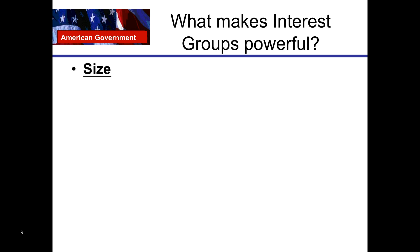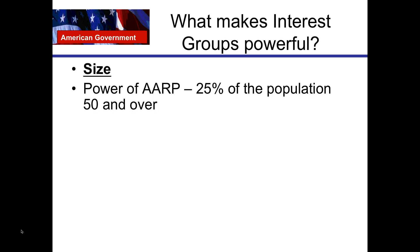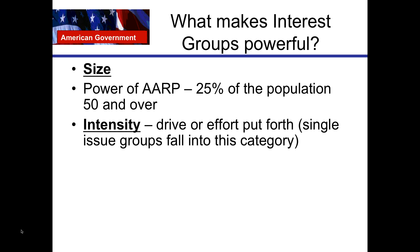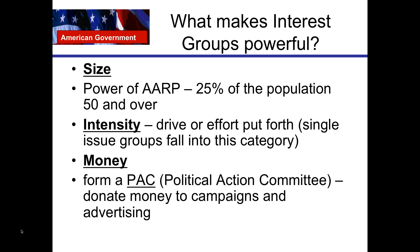What makes interest groups powerful? Their size — the AARP represents the elderly, and 25% of the population is 50 and over. Their intensity — some groups are more intense than others; they have a drive or effort to put forth, and single-issue groups generally fall into this category. If the interest group intensely believes in what it is advocating, that will make the group more powerful. And money — interest groups can help form a PAC, a political action committee, and thus donate money to campaigns and to advertising.